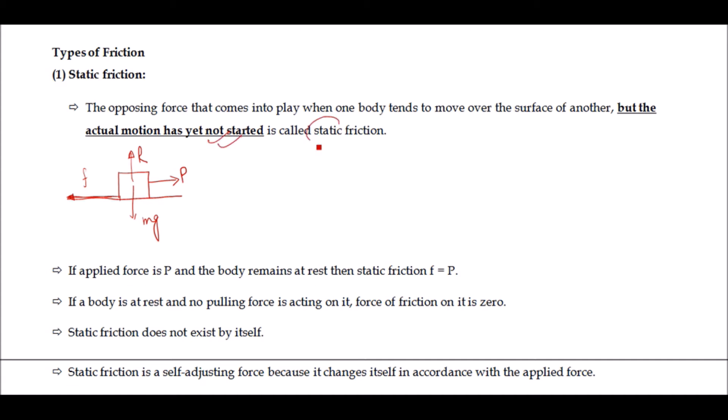The word 'static' means the thing which is at rest or not moving. Actual motion has not started, but the opposing frictional force comes into picture, nullifying the external force applied on the body. As shown here, an object is placed on the surface and external force P is applied; although the object is not moving, some frictional force has developed — we call this static friction. Static friction does not exist by itself; it is produced when the object is at rest and some force P is applied, so static friction equals the applied force.